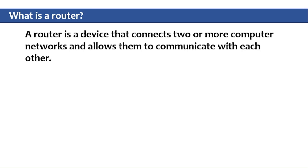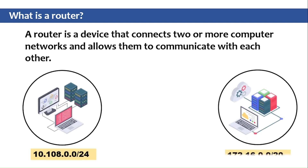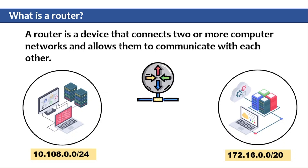A router is a device that connects two or more computer networks and allows them to communicate with each other. In layman's language, a router is a device — it can be hardware or software — which connects two or more different subnets or networks. In this example we have two networks: 10.1.0.0/8 and 172.16.0.0, and if we want these two networks to communicate, we require a router in between.